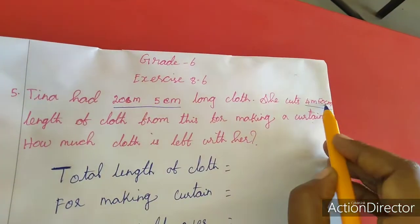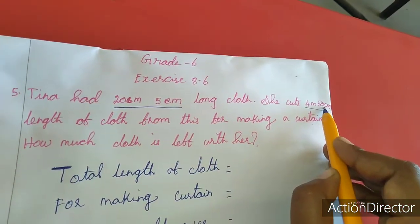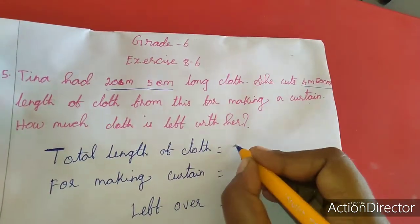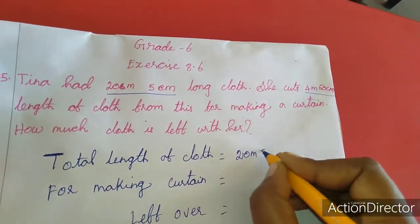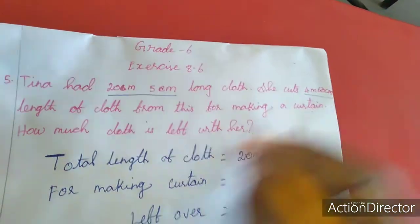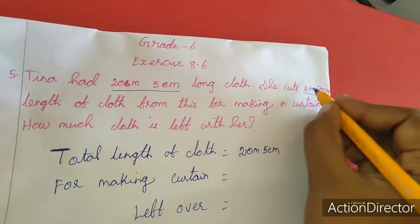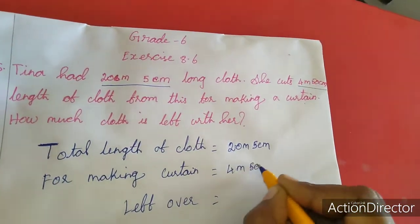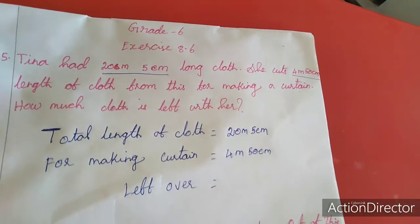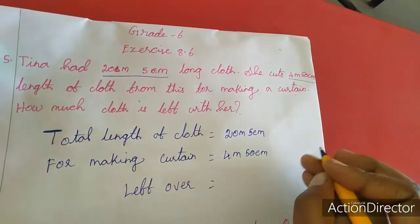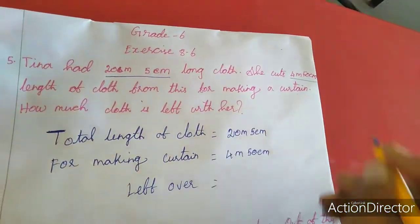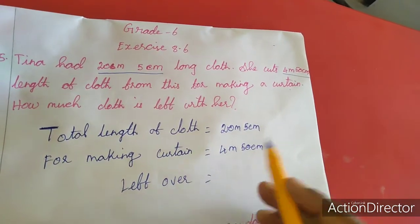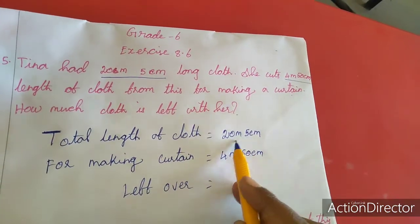So total length minus cut length gives remaining length. Total length of cloth is 20 meter 5 centimeter. For cutting, she cut 4 meter and 50 centimeter. The leftover cloth is what we need — if we subtract these two we will get the answer. First I am going to change this to one single unit, here in meter and here in centimeter.